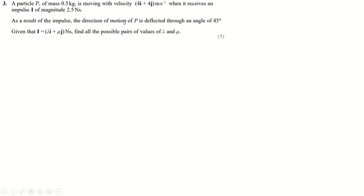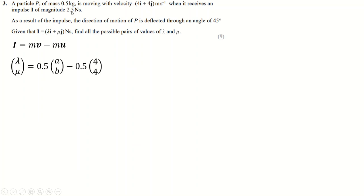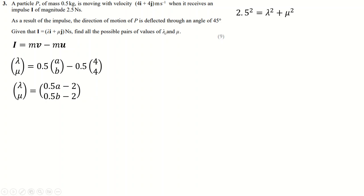Question three is a long 9-marker. Impulse equals MV minus MU. We know U is given, and the magnitude of the impulse is given. I'll call the impulse vector (λ, μ), and we know that λ² plus μ² equals the magnitude squared. The final velocity I'll call (A, B).